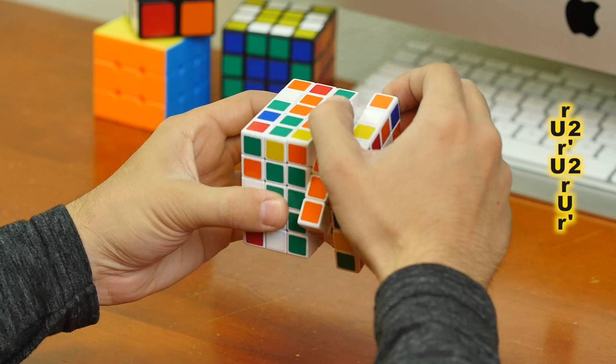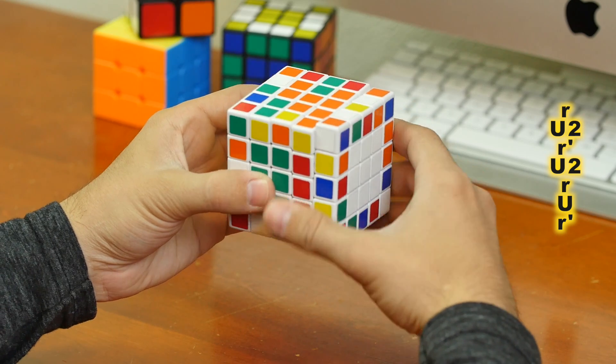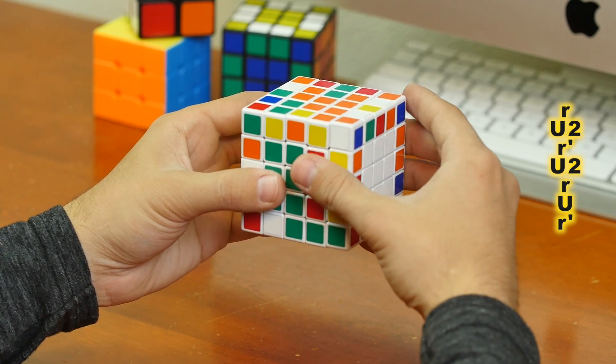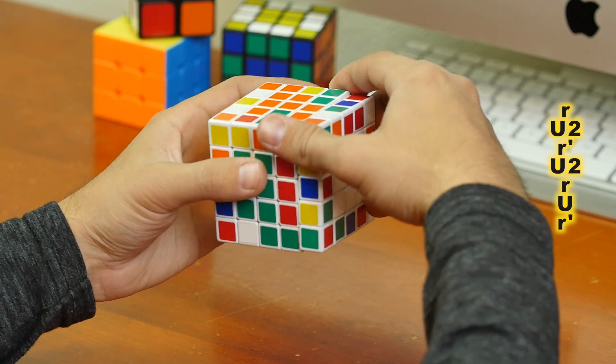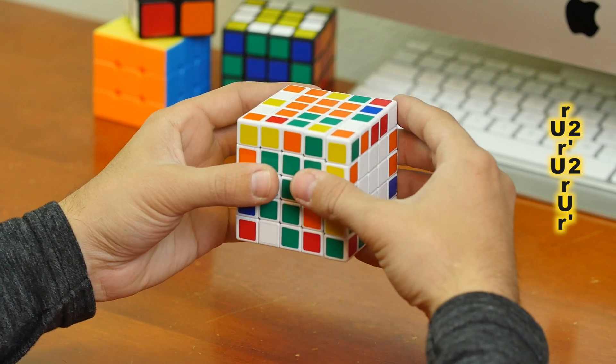Right, this lower right layer, clockwise. Up two times. This lower R, this right layer right here, go right prime. Up two times.